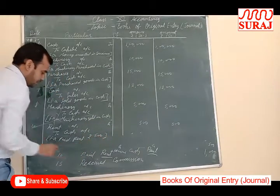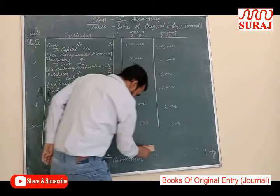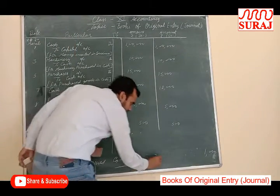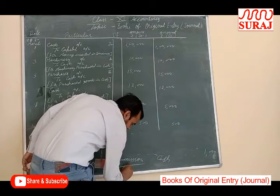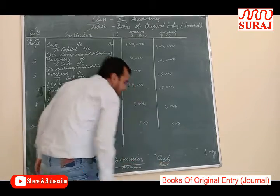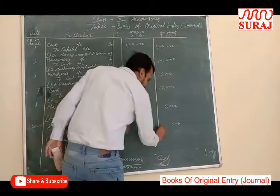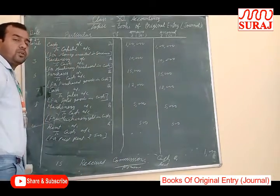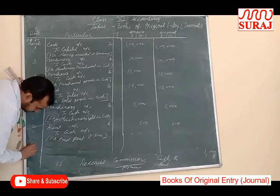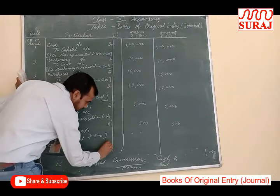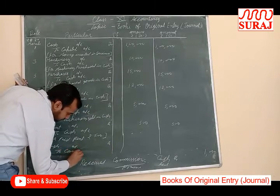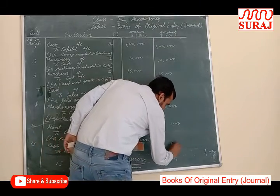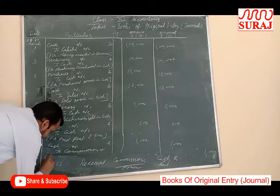Next transaction: Received Commission Rs. 1000. Received represents income. Entry will be through commission and cash accounts. Commission is a nominal account; cash is a real account. Nominal account rule: debit all expenses and losses, credit all income and gains. Commission is income, so commission will be credited. Cash comes in, so cash will be debited. Entry: Cash Account debit to Commission Account, Rs. 1000. Narration: For commission received.